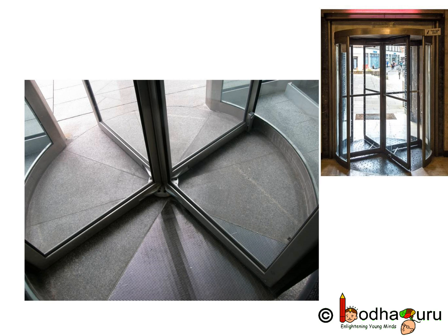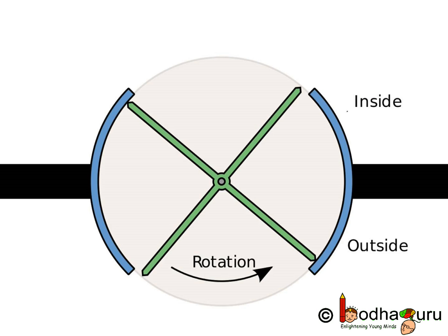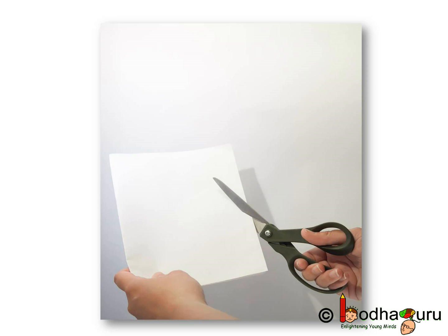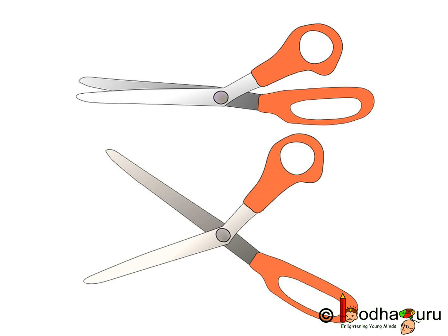Look at the plan of the door carefully. It is made of two intersecting lines. Another example, a pair of scissors. If you observe carefully, it is again made of two intersecting lines.